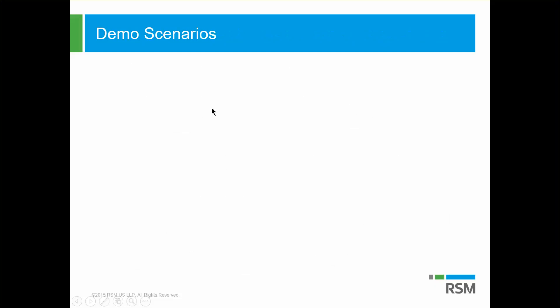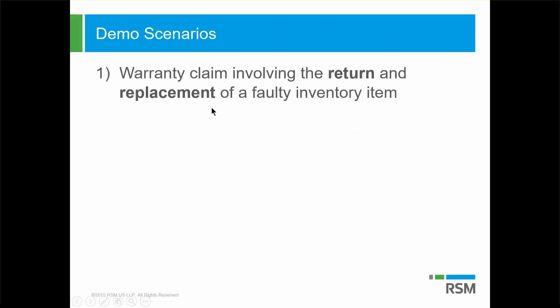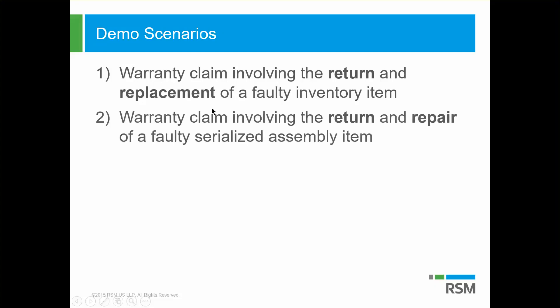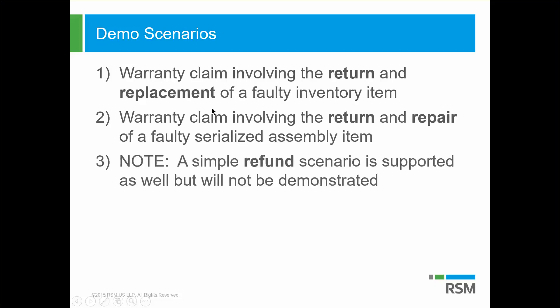In the demo portion, I'm going to provide a demo around two different scenarios. The first one is going to be a warranty claim involving the return and replacement of a faulty inventory item. Secondly, we're going to do a warranty claim involving the return and repair of a faulty serialized assembly item. One thing to note: the ability to process a refund through the warranty and repairs management bundle will not be part of this demonstration.